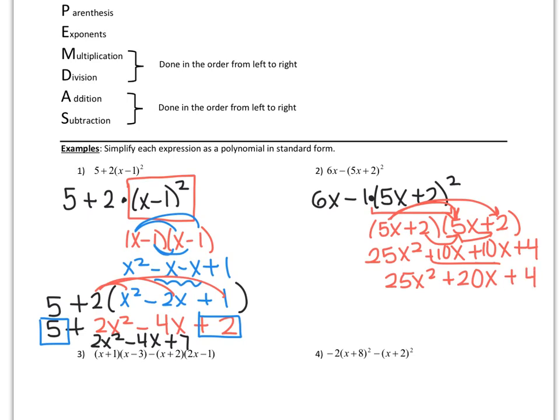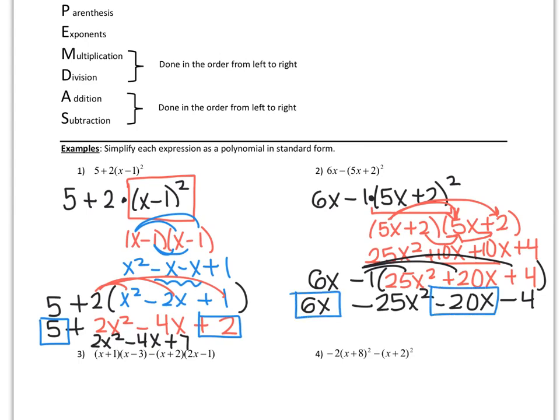And then I can bring down everything else. I have a 6x minus 1 times all this. So we're going to distribute that negative 1. So negative 1 times 25x squared is negative 25x squared. Then I'm left with negative 20x and negative 4. And then I bring down the 6x. And now my like terms are a positive 6x and a negative 20x. So my answer is negative 25x squared minus 14x minus 4. I got negative 14x by taking 6 and adding a negative 20.